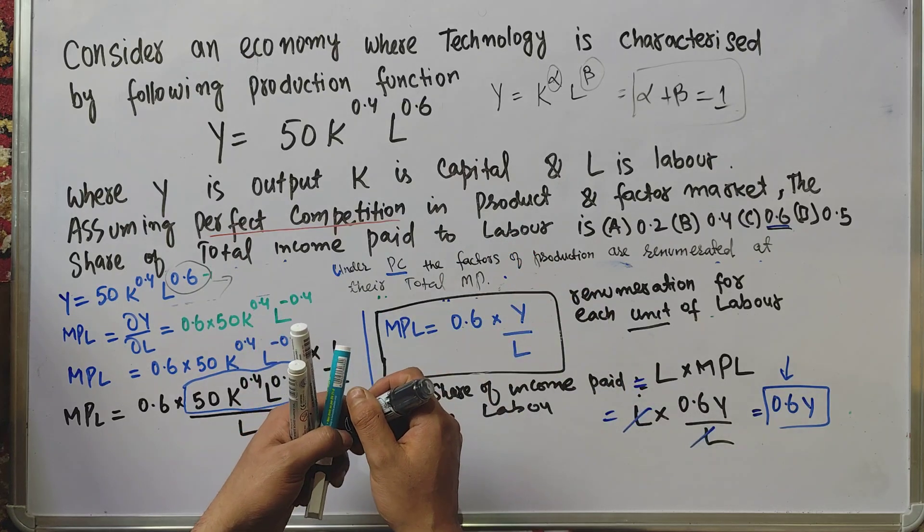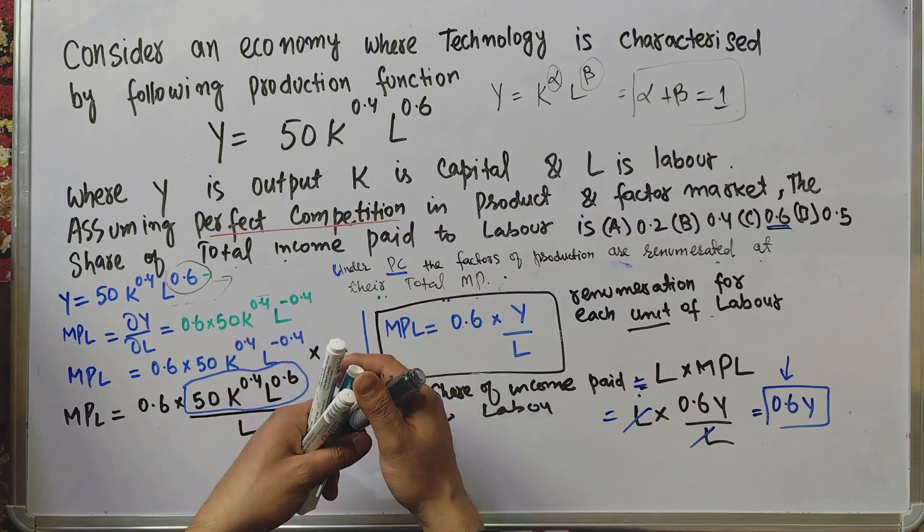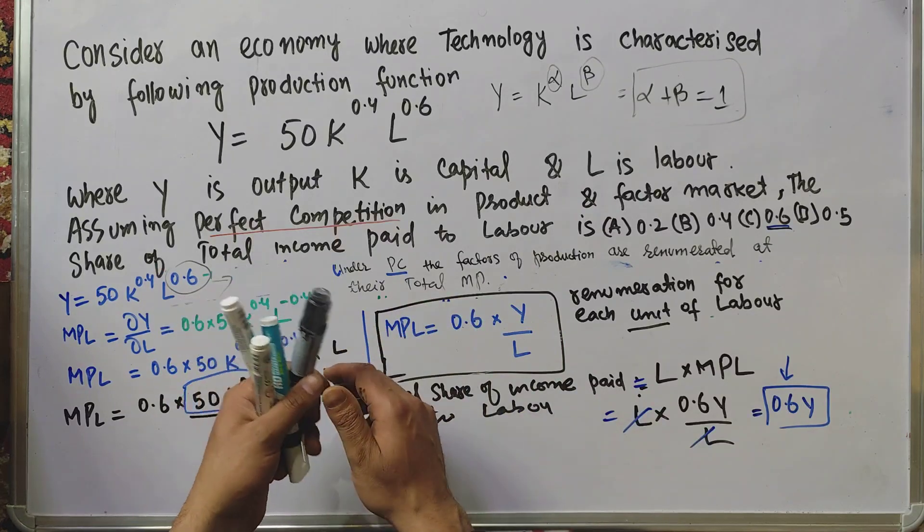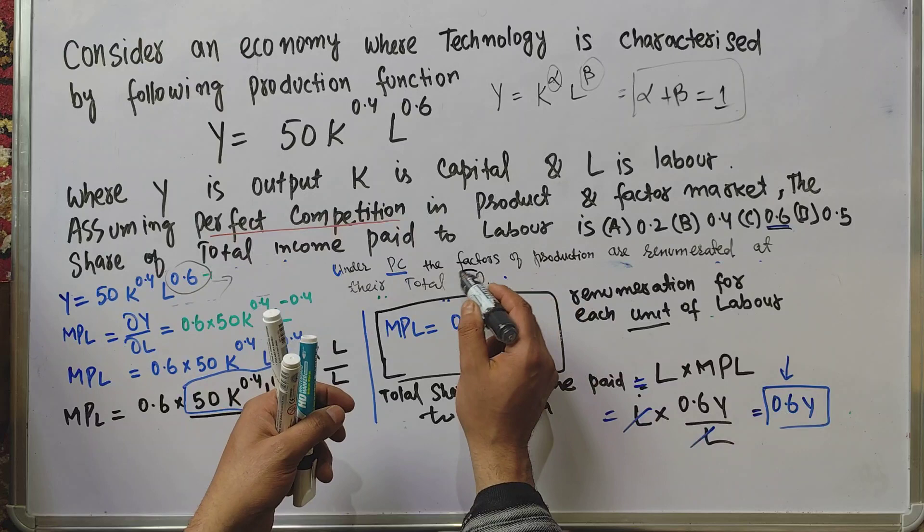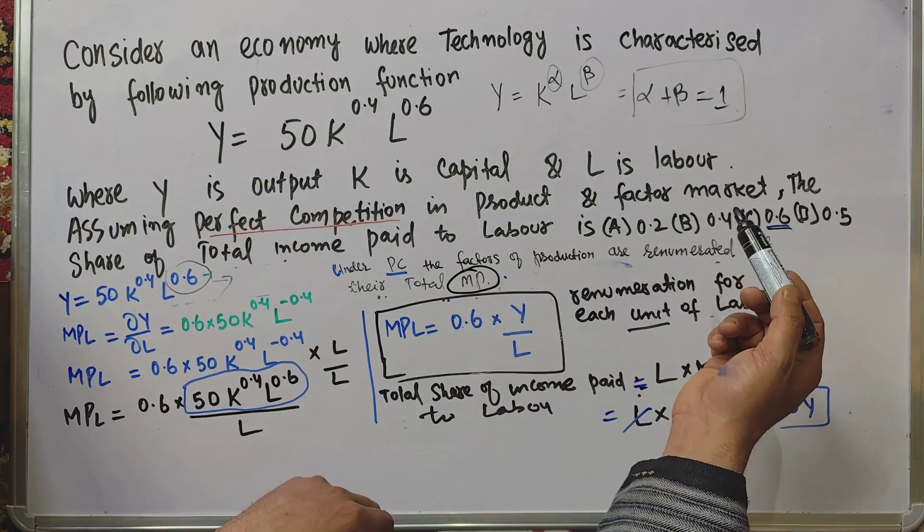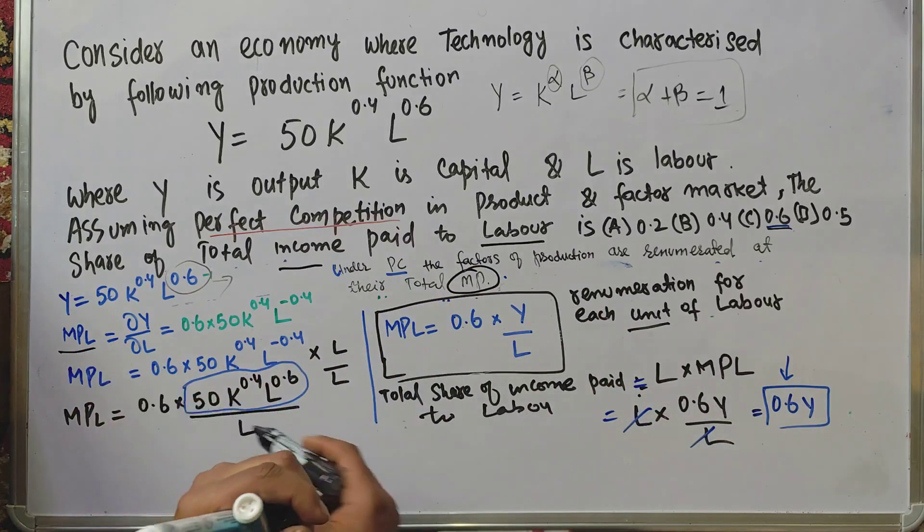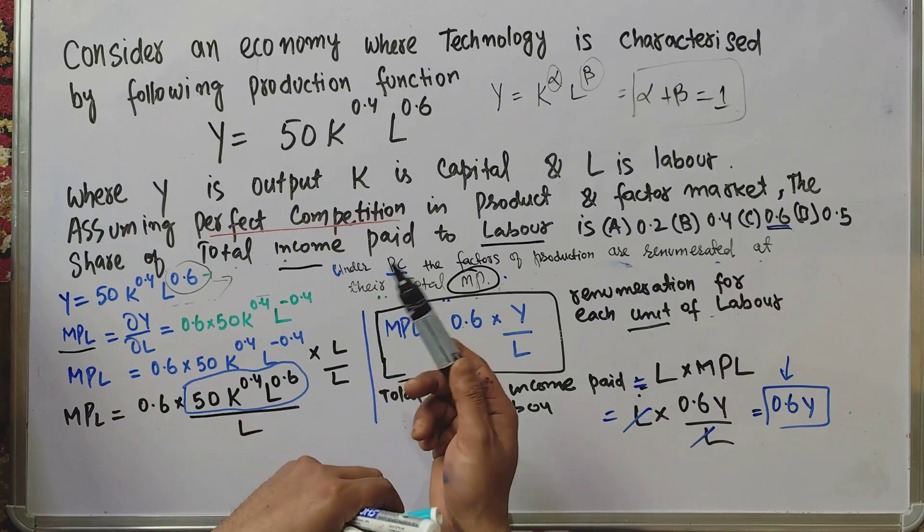To find the share of total income paid to labor, we know that in case of perfect competition, factors of production are remunerated at their marginal products. So first we find the marginal product of labor by taking the partial derivative of the production function with respect to L.